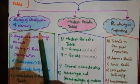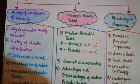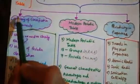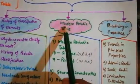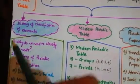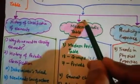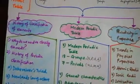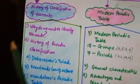Let's start the recapitulation — the summary of this chapter using a flowchart. The chapter is divided into three basic parts: first, the history of classification of elements; second, the modern periodic table; and third, periodicity in properties. We will cover the history of classification first, then move to the modern periodic table, which is very important, and then periodicity in properties — which is studied in detail at the Plus One level.